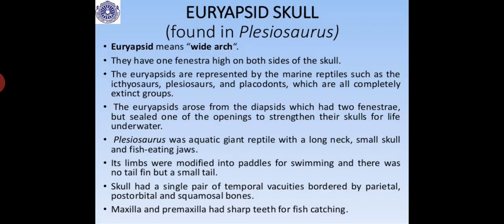Euryapsids have one fenestra high on both sides of the skull and are represented by marine reptiles. Plesiosaurs were aquatic giants with a long neck, small skull, and fish-eating jaws; limbs modified into paddles for swimming with a small tail and no tail fin. The skull had a single pair of temporal vacuities bordered by parietal, post-orbital, and squamosal bones, with sharp teeth on the maxilla and premaxilla for fish-catching.